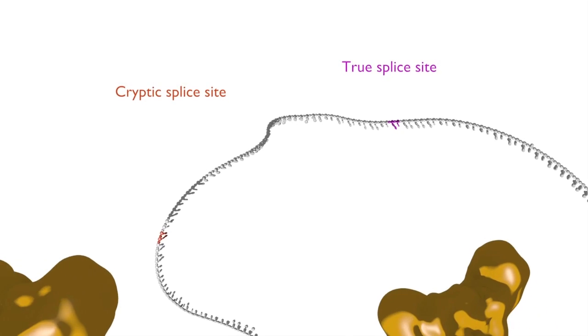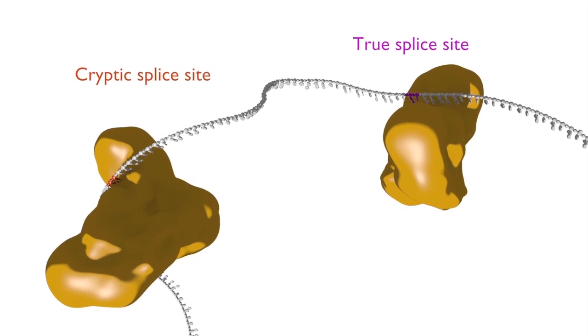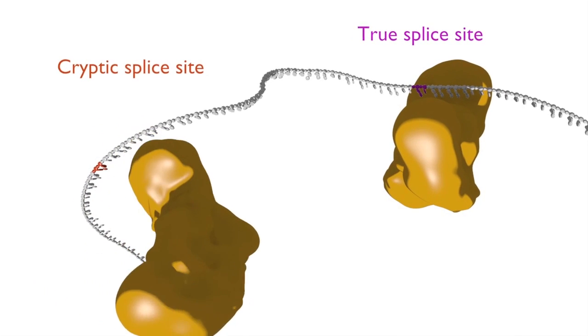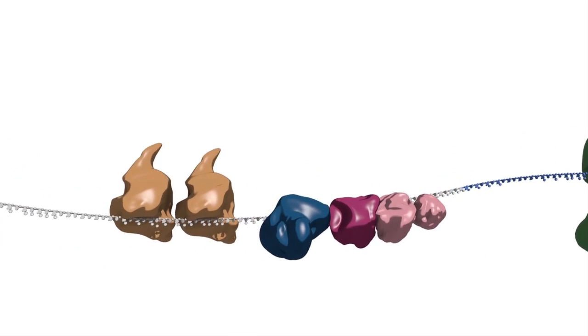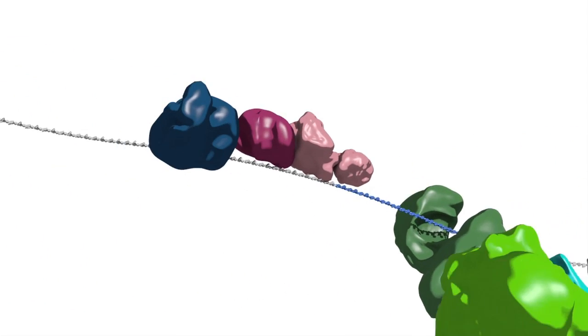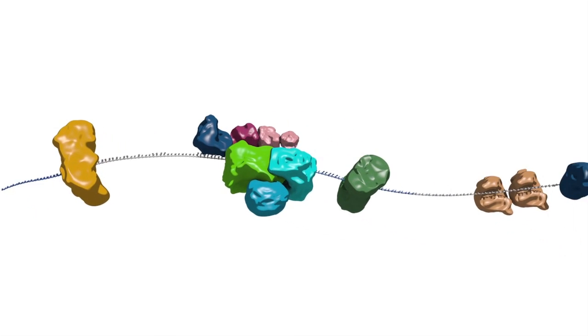Thus the spliceosome must not only reliably detect true splice sites, but it must also generally ignore cryptic splice sites. Let's now look in more detail at how spliceosomes distinguish and discriminate between potential splice sites in an mRNA and how cells can regulate alternative splicing.